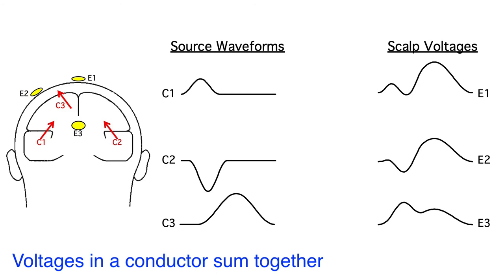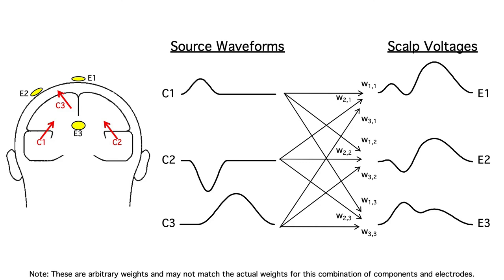the voltage recorded at each electrode will be a weighted sum of the underlying source waveforms. There's a different weighting between each component and a given electrode, reflecting the location and orientation of the dipole, the location of the electrode, and the conductivity of the brain, meninges, skull, and scalp.